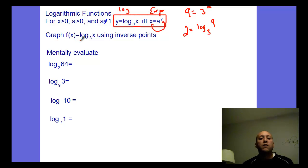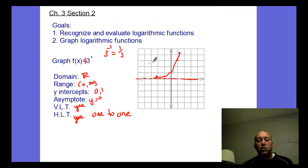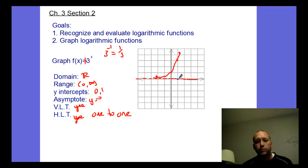So the graph of log base three of x — we could graph it using inverse points. The log is the inverse of the exponential function. So if we go back and look at this graph, let's take these points we plotted and plot the inverse points. So (0, 1) will become (1, 0).